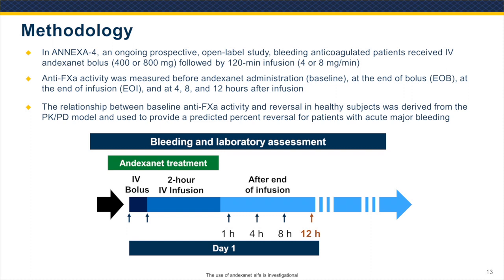Annexa-4 is an ongoing open-label study where bleeding anticoagulated patients receive one of the two recommended doses. There is limited sampling available, so anti-factor Xa activity is measured prior to the IV bolus, at the end of the IV bolus, at the end of the two-hour infusion, as well as 4, 8, and 12 hours after the end of the infusion. The relationship between baseline anti-factor Xa activity and reversal derived using the PKPD model was used to predict what we might see in bleeding patients based on their baseline anti-factor Xa activity levels.